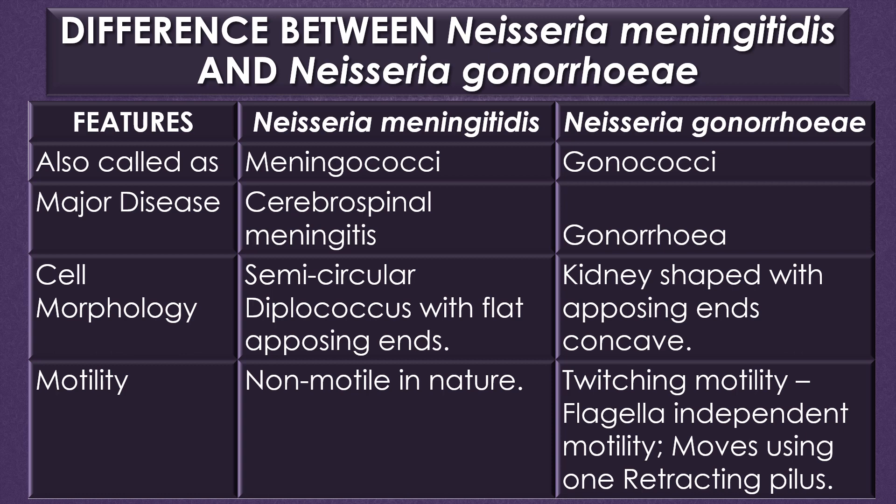The major disease caused by Neisseria meningitidis is cerebrospinal meningitis, and the major disease caused by Neisseria gonorrhoeae is gonorrhea. Regarding cell morphology, meningococci appears as a semicircular diplococcus with flat opposing ends, and gonococci appears in a kidney shape with concave opposing ends.